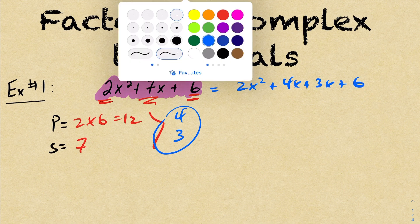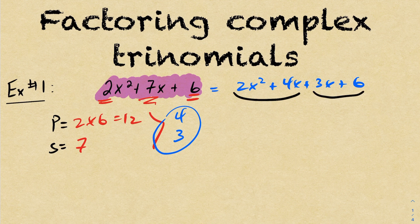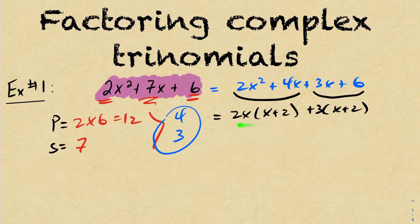Once you find those two numbers, you take your quadratic and replace the 7x with a 4x plus 3x. What you end up getting is these first two terms and these next two terms will always have a GCF. The GCF of the first two terms is 2x, leaving me with x plus 2. And the GCF of the next two terms is 3, leaving me with x plus 2. When you're factoring something out of an expression, it's division: 2x² divided by 2x is x, 4x divided by 2x is 2, 3x divided by 3 is x, and 6 divided by 3 is 2.